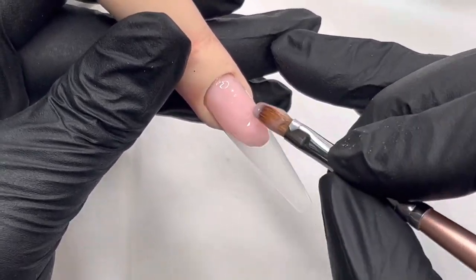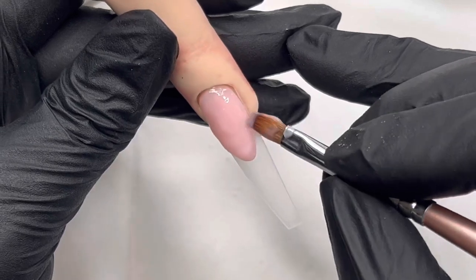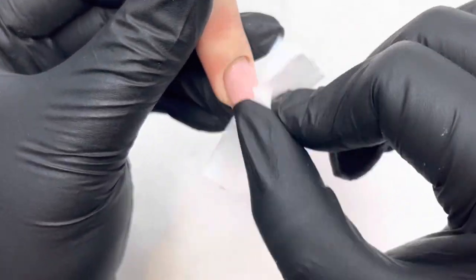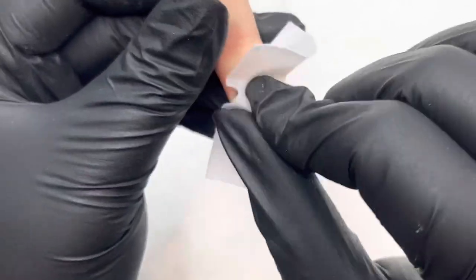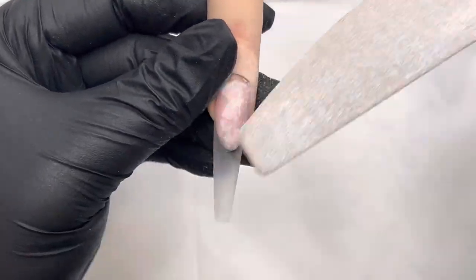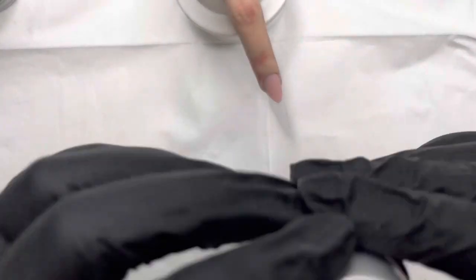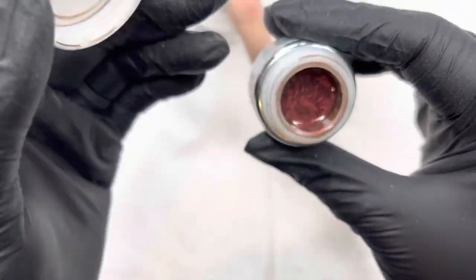Anyway, we're starting off here with some builder gel by Bling Line and I am creating a smile line. Because this is a non-self-leveling gel, it looks a little bit humpy bumpy, but once we have that wiped out and then I like to give it a little file over and neaten it up, then it's all good.